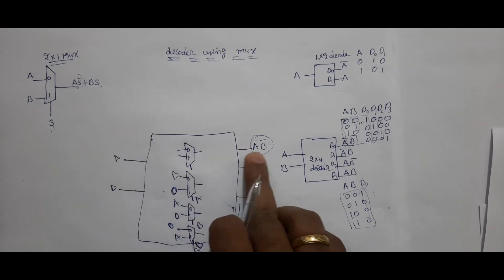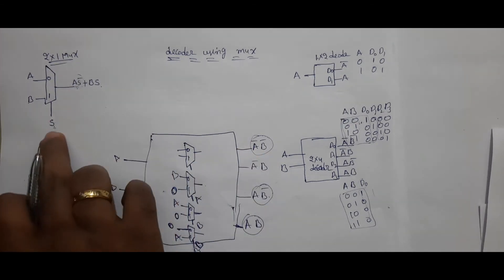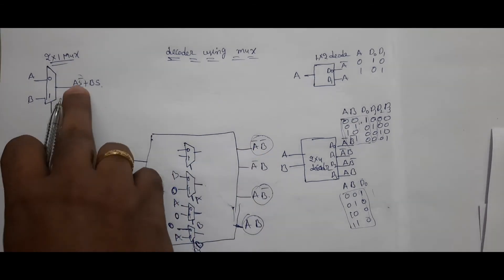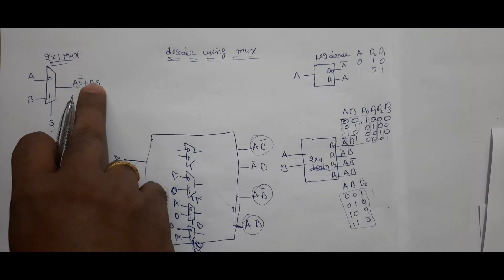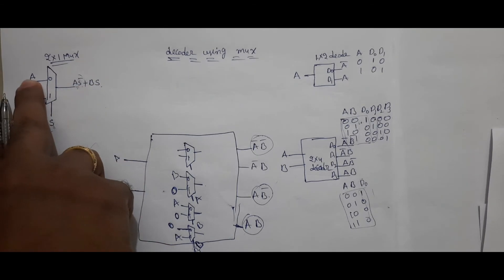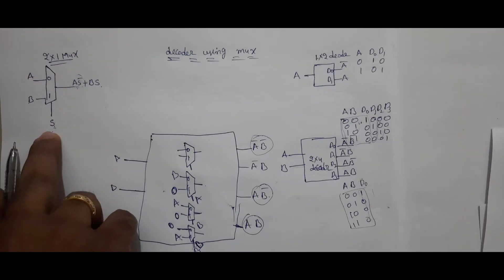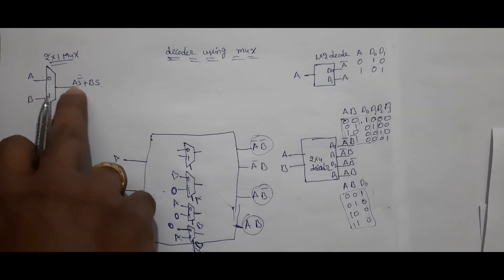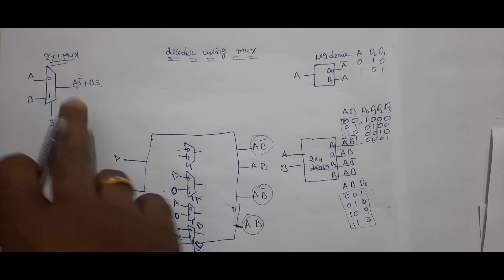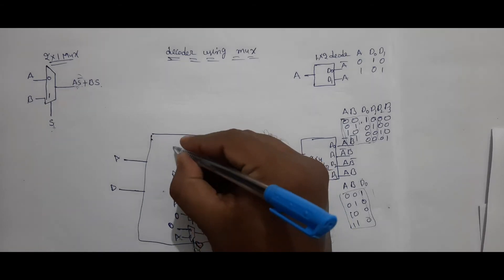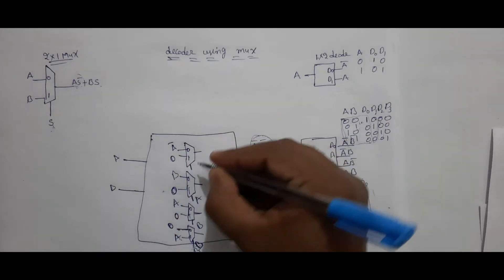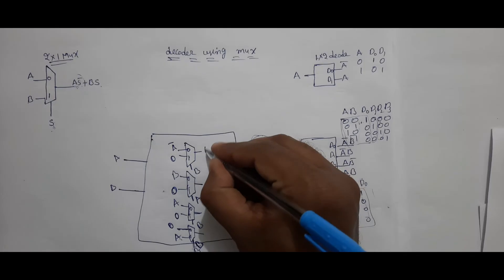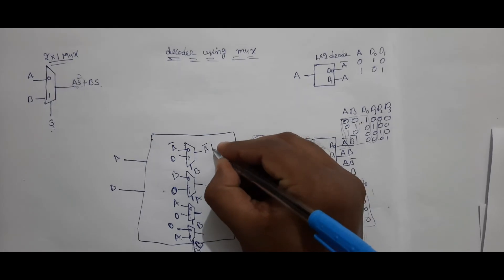Coming to the point A B-bar: if you give B at the selection line, B-bar will come into picture. If you put 0 here, this term will not come. If I give A-bar here, then A B-bar and A-bar B-bar will both come into picture. That's why you connect A-bar here, 0 here, and B at the selection line. Output is A-bar B-bar.